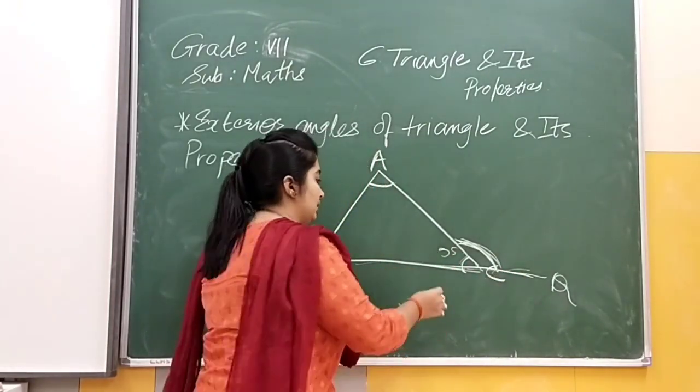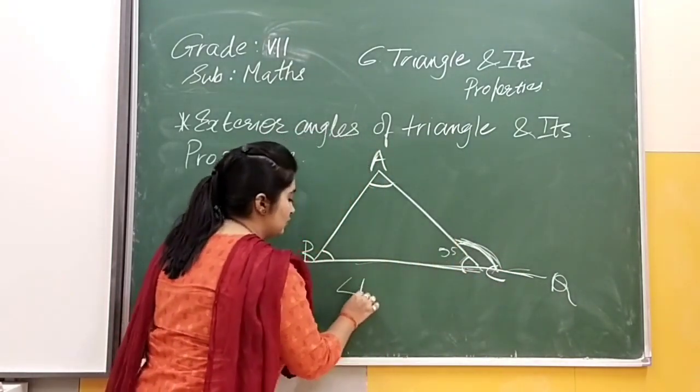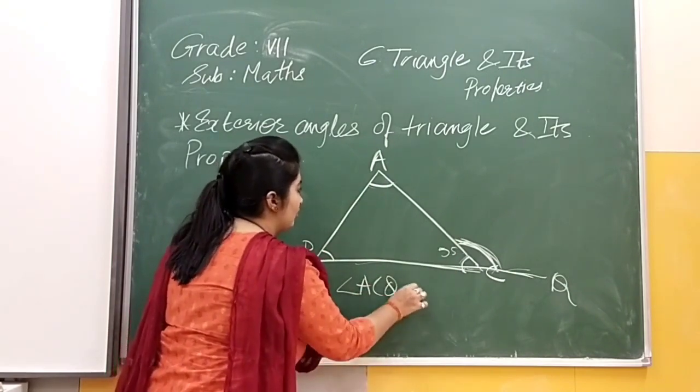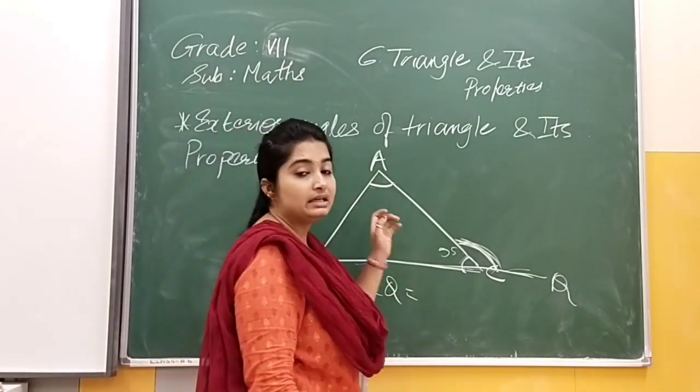For suppose that is our angle A, C, Q. So this angle C and our angle ACQ will be equal to what? Our opposite side interior angles.